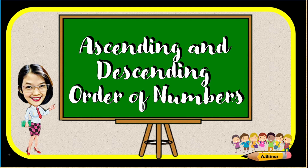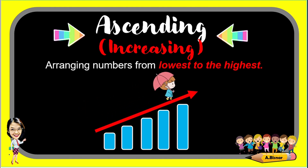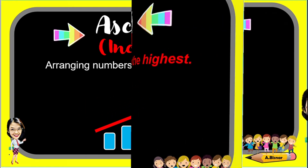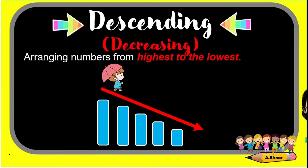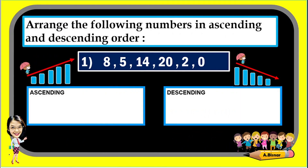This lesson is about ascending and descending order of numbers. Ascending, also known as increasing, is arranging numbers from lowest to the highest. Descending, also known as decreasing, is arranging numbers from the highest to the lowest. Let us have this as our example.